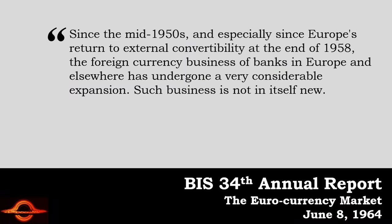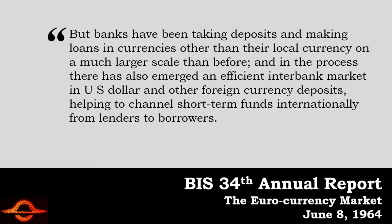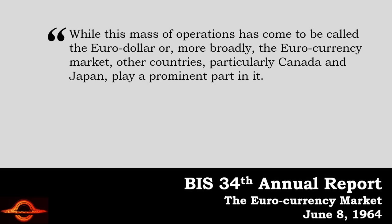That's what the BIS said about the early Eurodollar system when it first finally looked at it in 1964, in its 34th annual report. Since the mid-50s, and especially since Europe's return to external convertibility at the end of 1958, the foreign currency business of banks in Europe and elsewhere has undergone very considerable expansion. Banks have been taking deposits and making loans in currencies other than their local currency on a much larger scale than before. And in the process — and this is the key part — there has emerged an efficient interbank market in U.S. dollar and other foreign currency deposits, helping to channel short-term funds internationally from lenders to borrowers. While this massive operation has come to be called the Eurodollar, or more broadly the euro currency market, other countries, particularly Canada and Japan, play a prominent part in it.